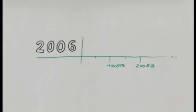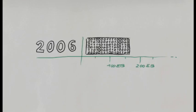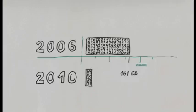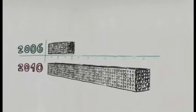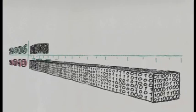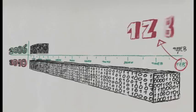In 2006, 161 exabytes of information were created or replicated worldwide. IDC estimates an increase of over six times this metric by 2010 to 988 exabytes, or a zettabyte.